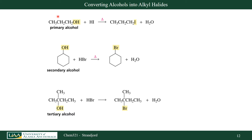Let's look at the following reactions and determine whether they will undergo substitution preferentially by SN2 or SN1. In this first example, I have a primary alcohol and a halogenated acid. So I'm going to protonate my hydroxyl group, and then my iodine can come back in and attack the carbon the hydroxyl group is attached to, to form 1-iodopropane. This is going to be an SN2 reaction — primary alcohols undergo substitution by SN2.